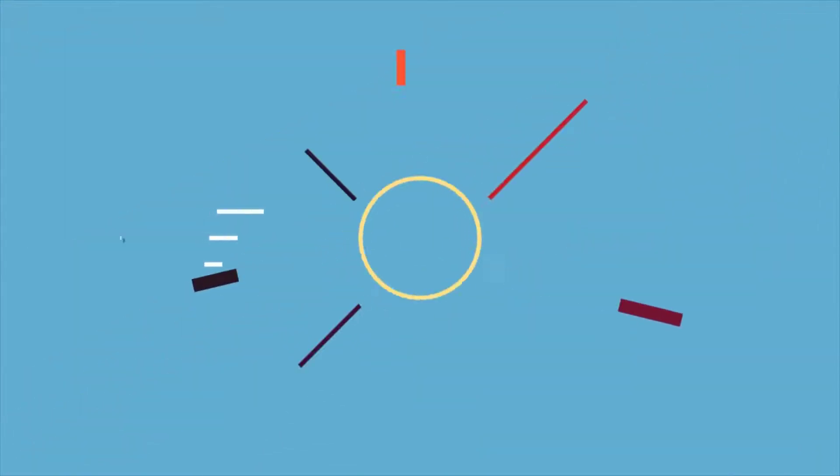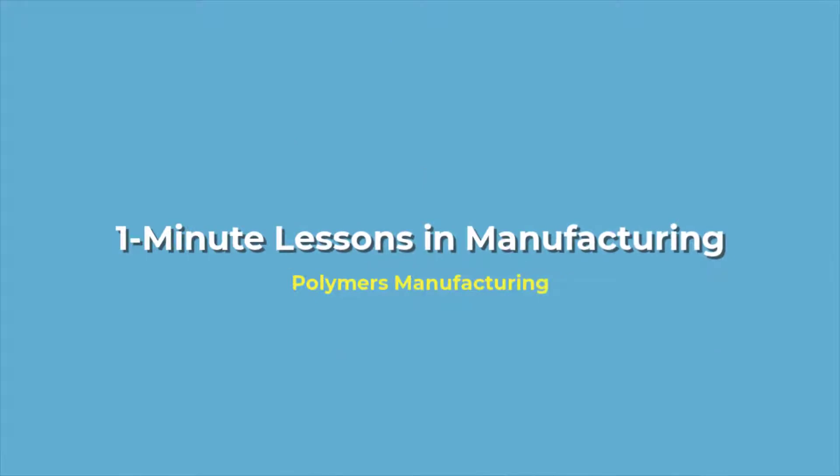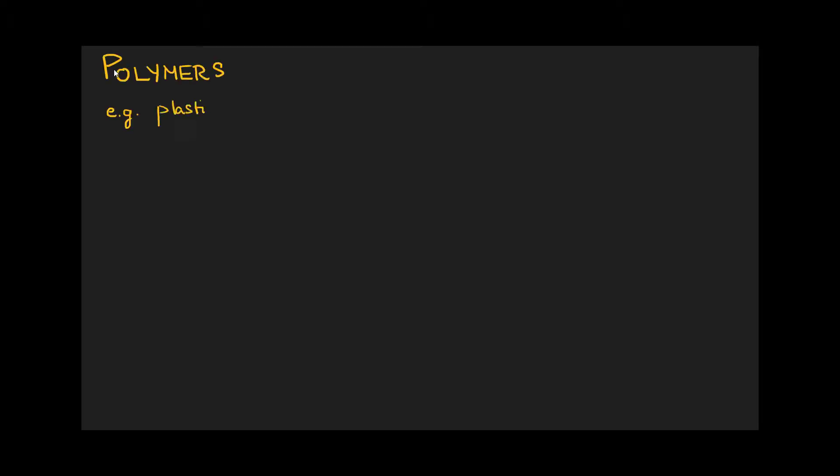Welcome back, class, for another edition of One Minute Lessons in Manufacturing. Today we're talking about how to make polymers, a.k.a. how to make Legos and rubber bands.